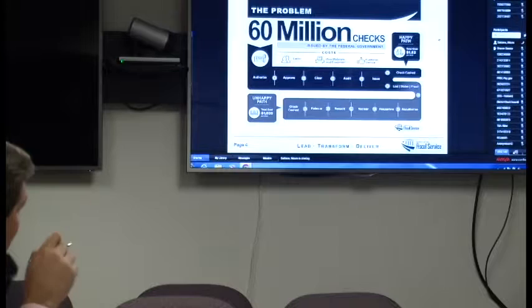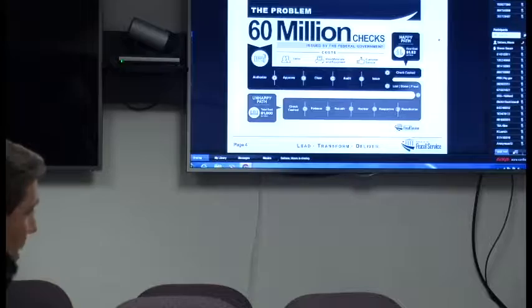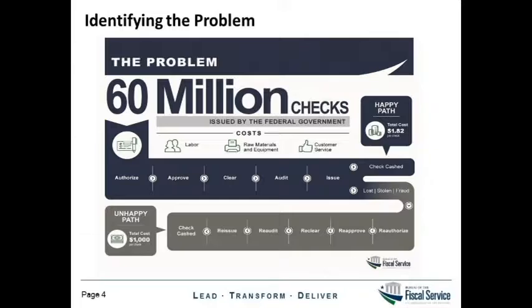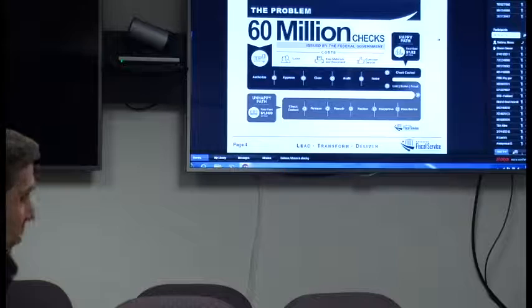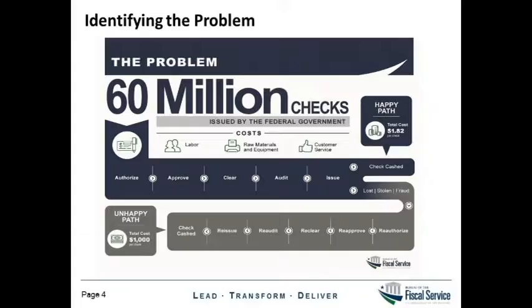The happy path cost is $1.82 — our fiscal year 15 fully loaded cost of a paper check. That includes everything that goes into the production of the check: the ink, postage, personnel, rent, utilities, everything. That's the happy path of a check. Looking at the bottom left, a lot of agencies we've spoken with believe the unhappy path of a check could be well over $1,000. So in a nutshell, that is the business problem — just eliminating paper checks.